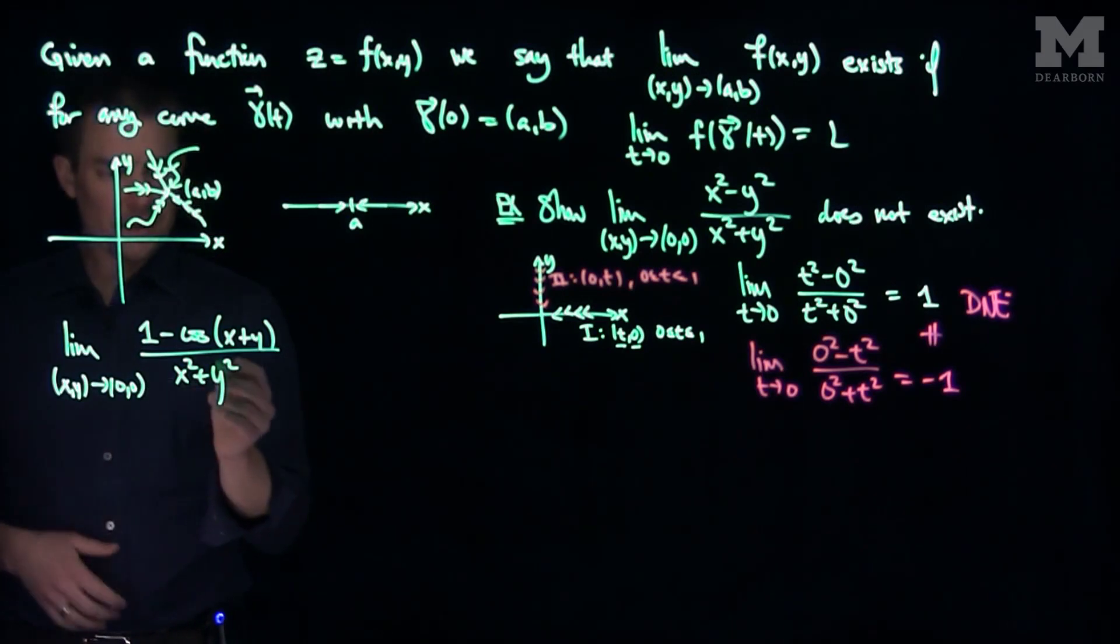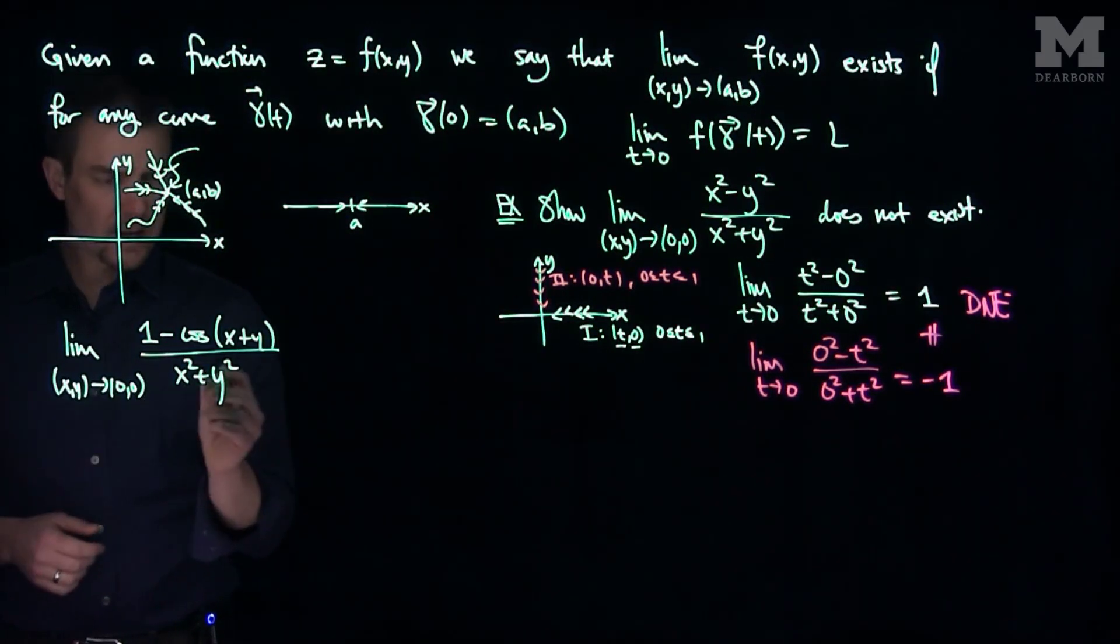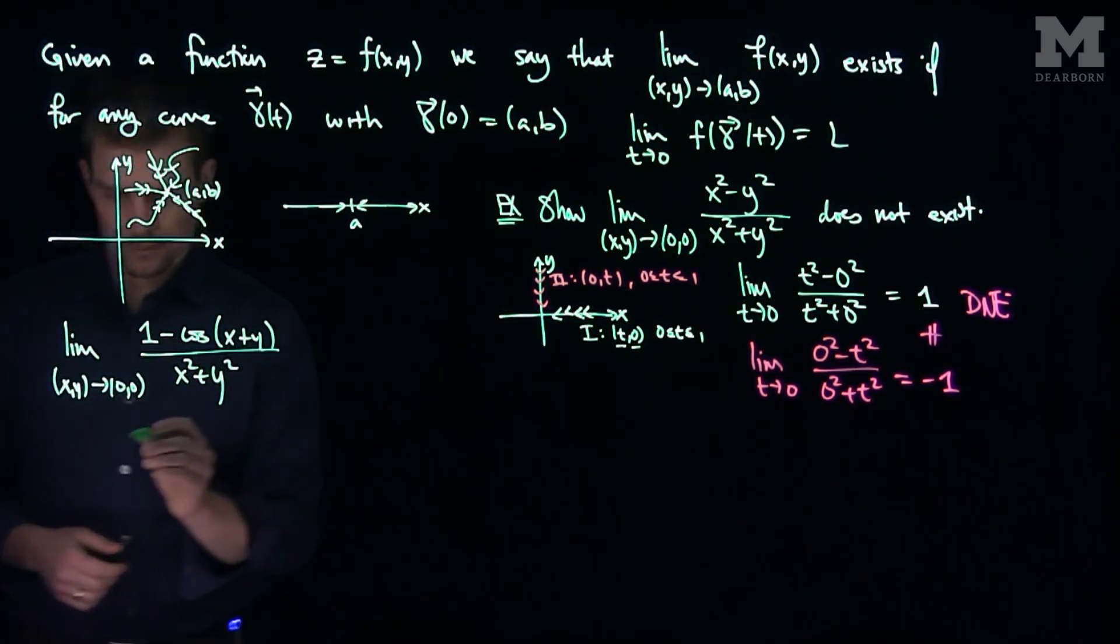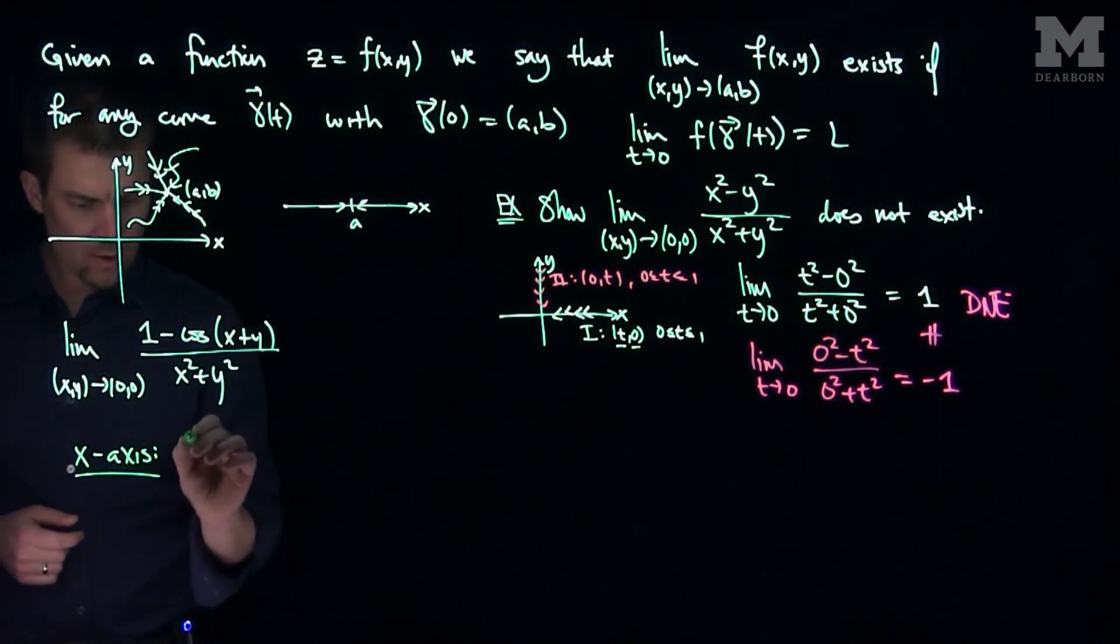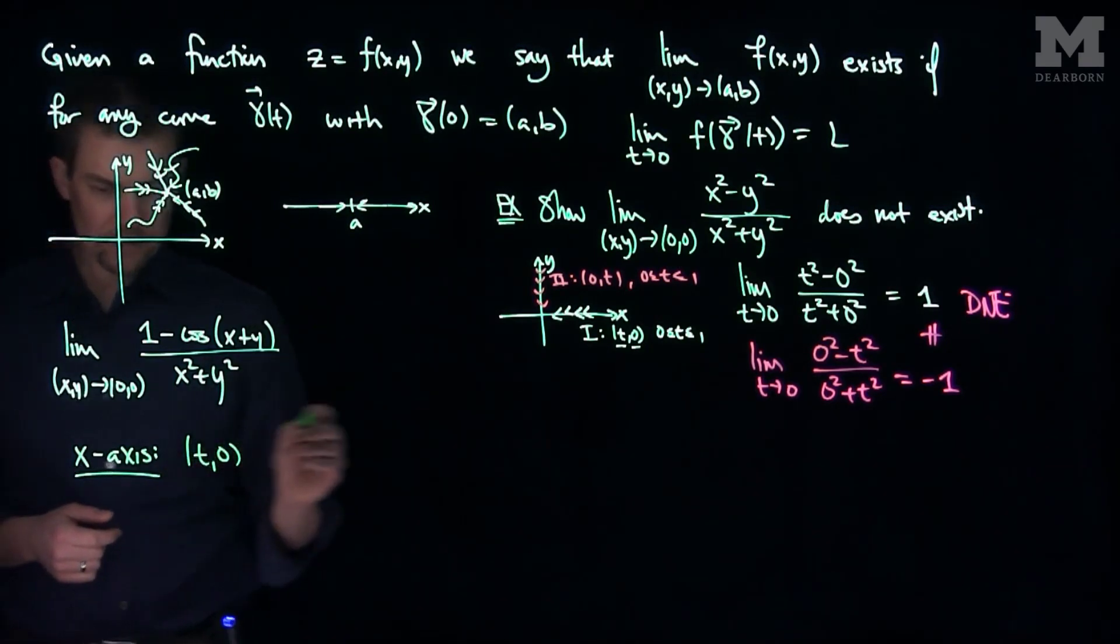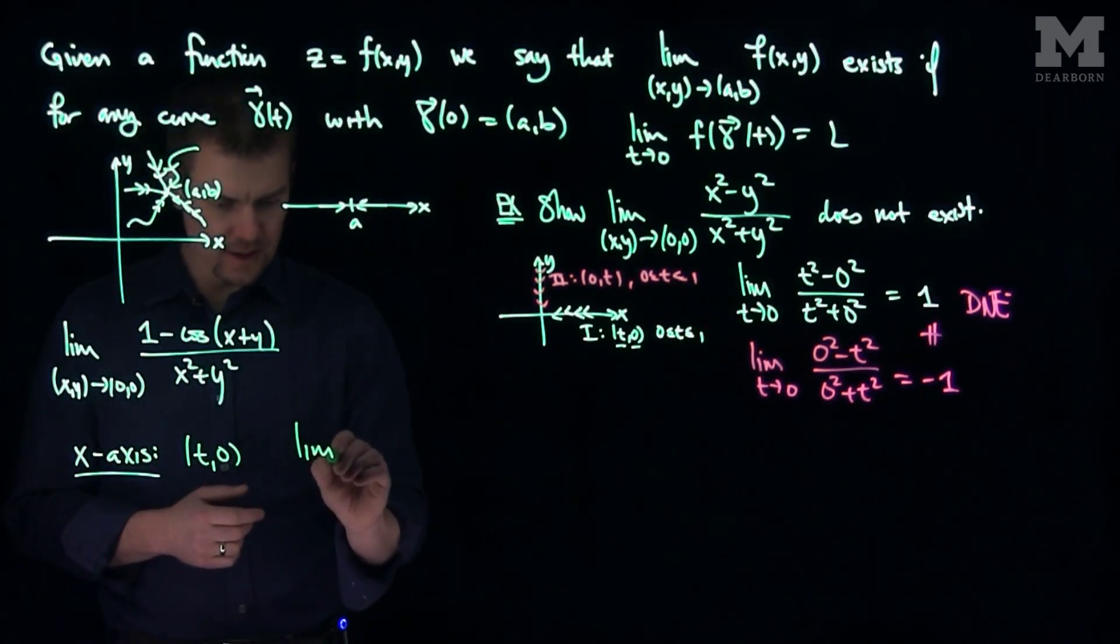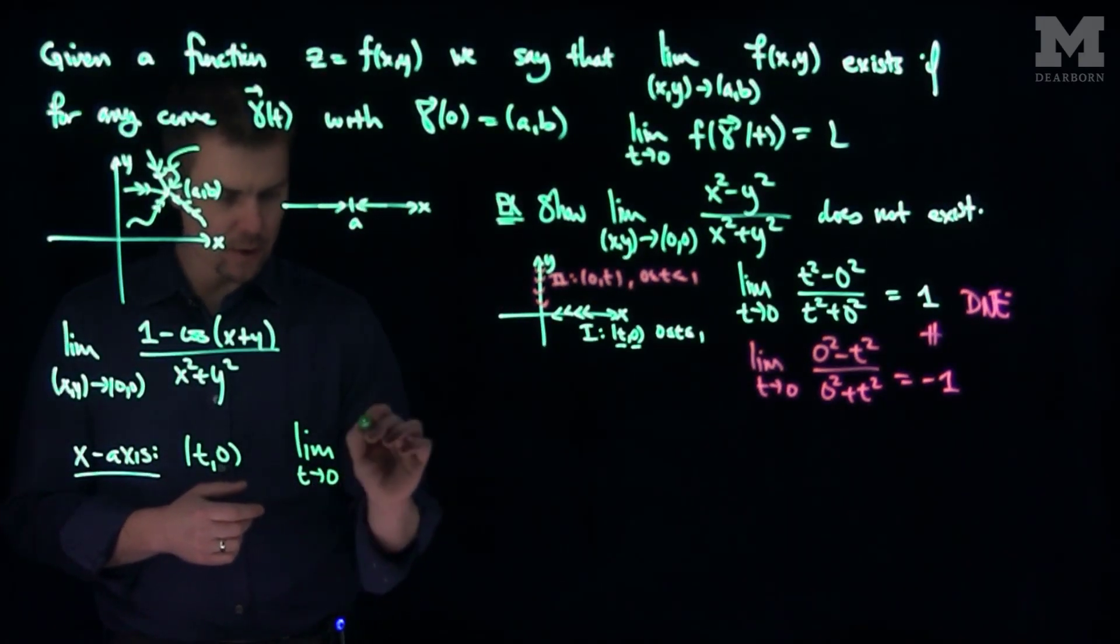then let's see what happens. So, if we look at this, if I look at the limit on the x-axis, if we look at on the x-axis, we'll have the curve t comma 0, and so let's figure out what that is.